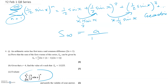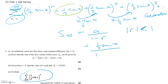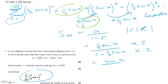We need the sum to infinity formula: a over (1 minus r), valid provided the modulus of r is less than 1. The first term a is (1/2)sin x and the common ratio r is also (1/2)sin x. So the sum is (1/2)sin x over (1 minus (1/2)sin x), which simplifies to sin x over (2 minus sin x).